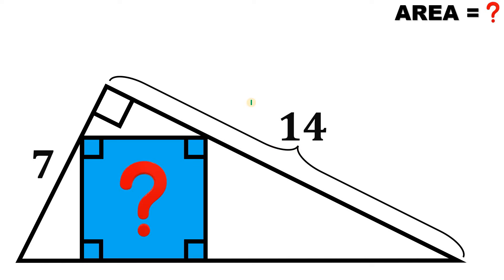To answer this kind of question, what we're going to do is use the property of similar triangles. Where are the similar triangles? If we let this angle be equal to alpha and this angle be equal to beta, we know alpha plus beta equals 90 degrees.